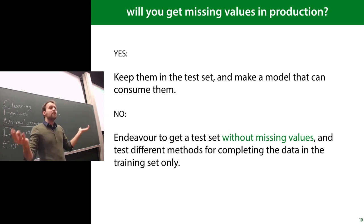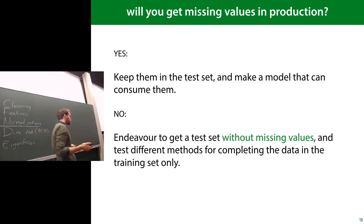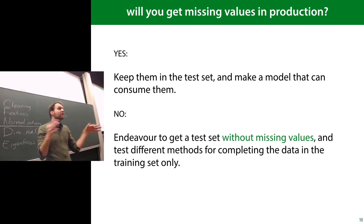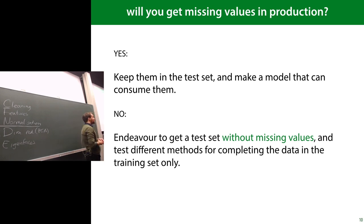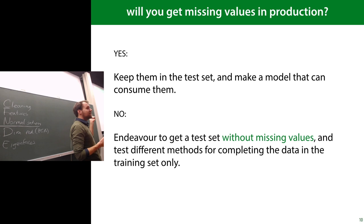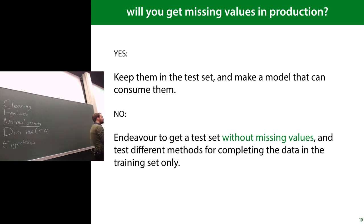The key question is: will you get missing values in production in the same way as in your dataset? For example, if your data comes from a web form with an optional question, that missing data is expected and will also appear in production — so your model has to deal with it. That means you need to keep missing data in the test set and test how your model performs on data with missing values.